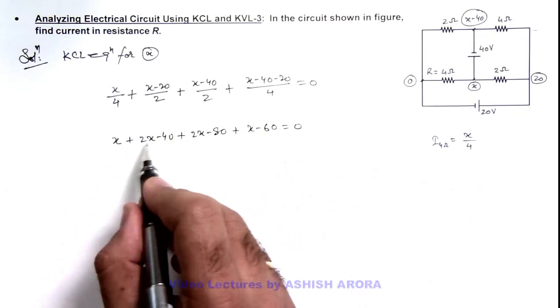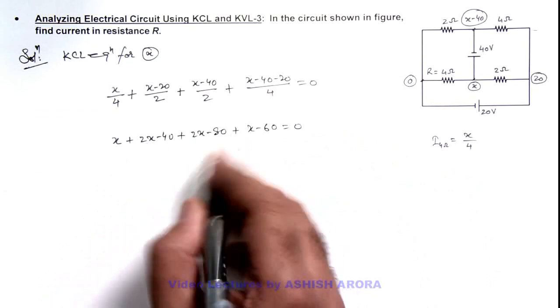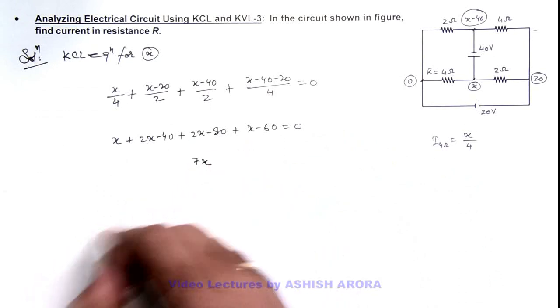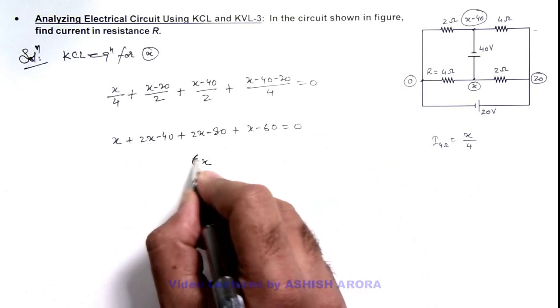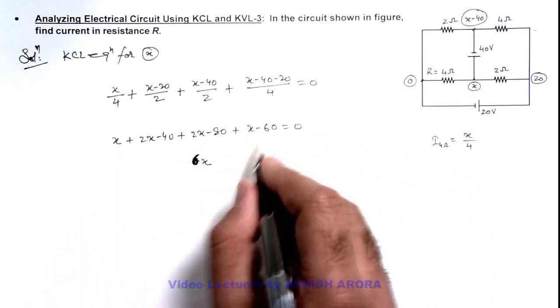So here it is x, 2x, 3x, 5x, 7x... will be, sorry, this is 6x. Here this will be 6x is equal to...